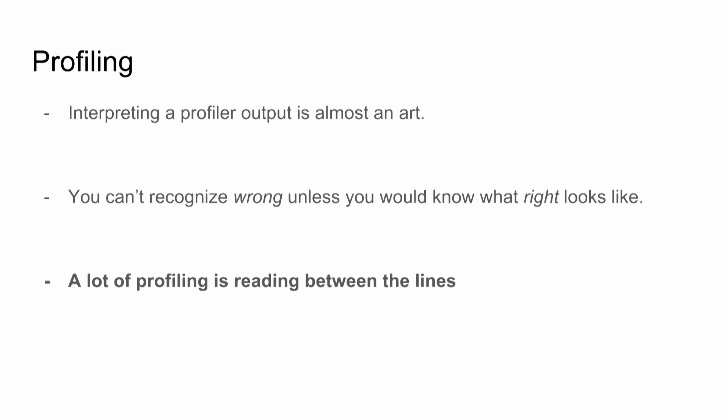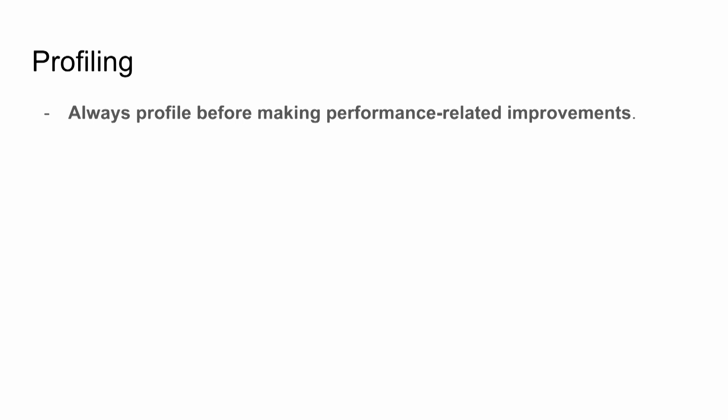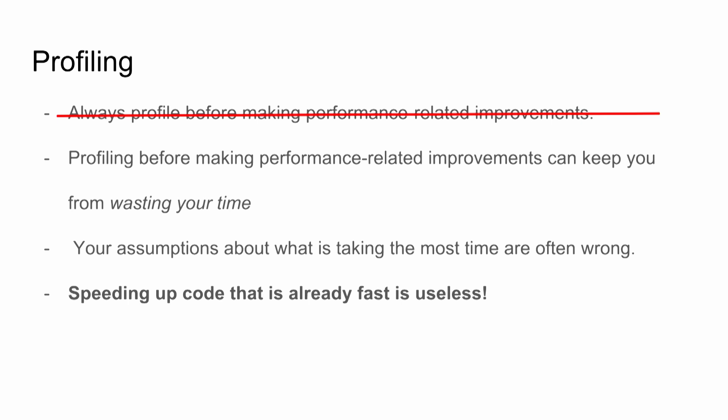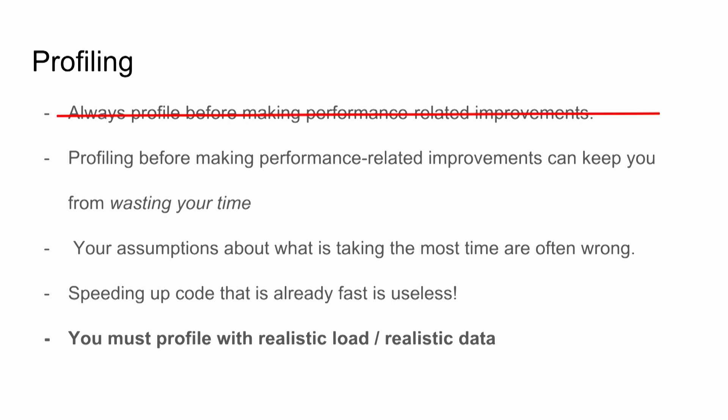A lot of it is reading between the lines. Maybe you'll see that you're spending a lot of time in one function, but you don't know what the answer is — it won't tell you 'oh, you could cache that.' A lot of it is trying to figure out what isn't there. If you profile before making performance-related improvements, it can keep you from wasting time, because a lot of the time what you think is the problem is not at all the problem. Maybe you're just calling one stupid function over and over again and not caching the result. You get a lot of surprises when doing this. Also, 99.9% of your code that's already super fast is not helpful when you speed it up.